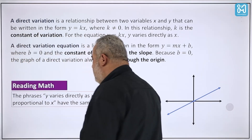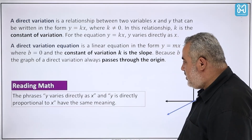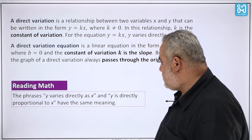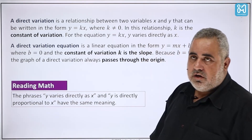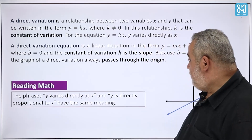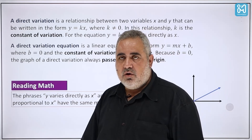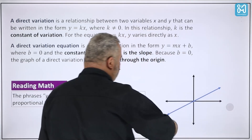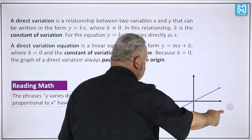The phrases 'y varies directly as x' and 'y is directly proportional to x' have the same meaning. So when a question says either phrase, it's the same idea: y = kx. The graph of direct variation must pass through (0, 0).